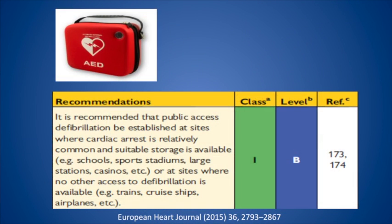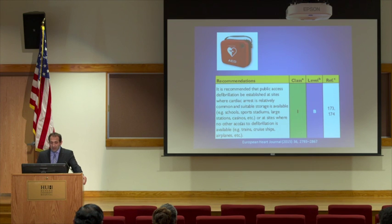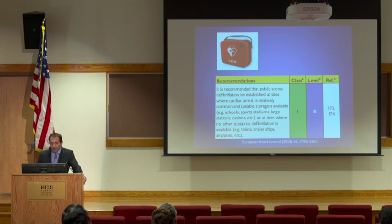Regarding AEDs, it is recommended that public access to defibrillation be established wherever there might be a lot of people who could potentially have sudden death. That includes schools, airports, sport venues, casinos, and areas where defibrillation is not otherwise available — on trains or airplanes where an ambulance can't reach you. They're recommending class 1 level evidence B for placement of AEDs, and these are popping up everywhere, which is a good thing.